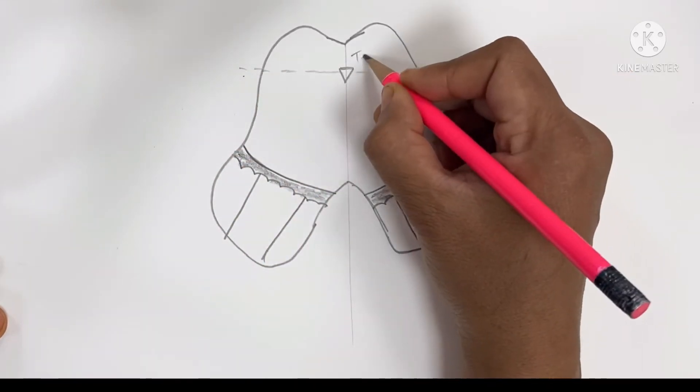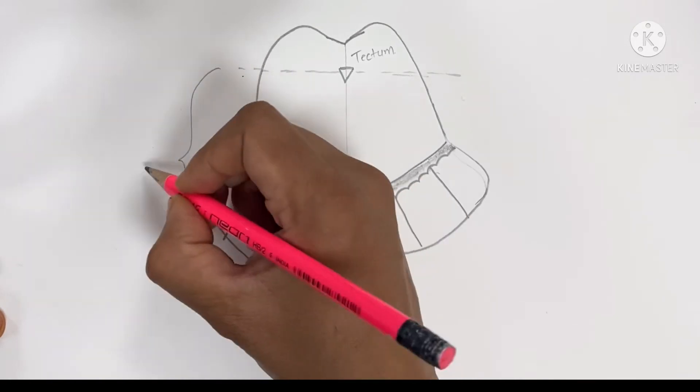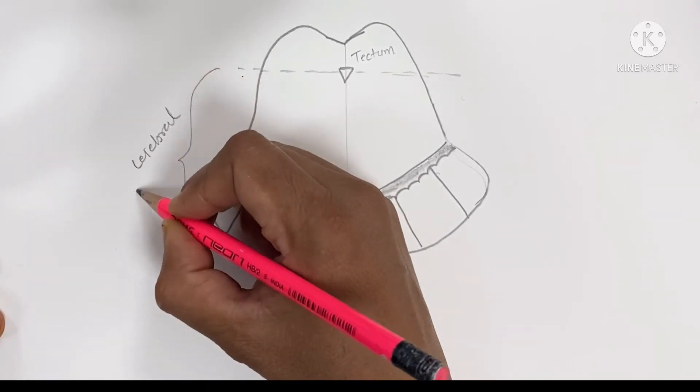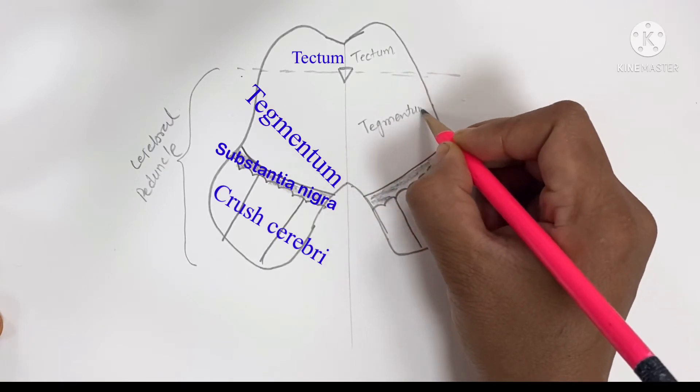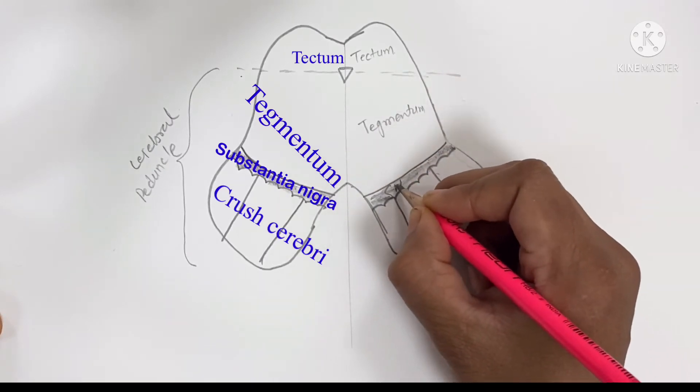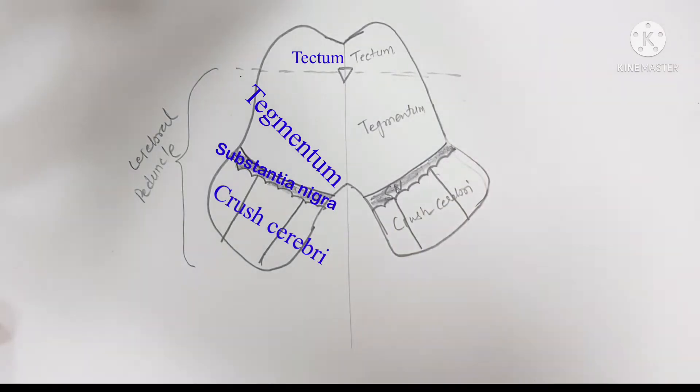Dorsal to the cerebral aqueduct is known as the tectum, and ventral to the cerebral aqueduct is known as the cerebral peduncle. The cerebral peduncle is divided into three parts: tegmentum, substantia nigra, and crura cerebri.